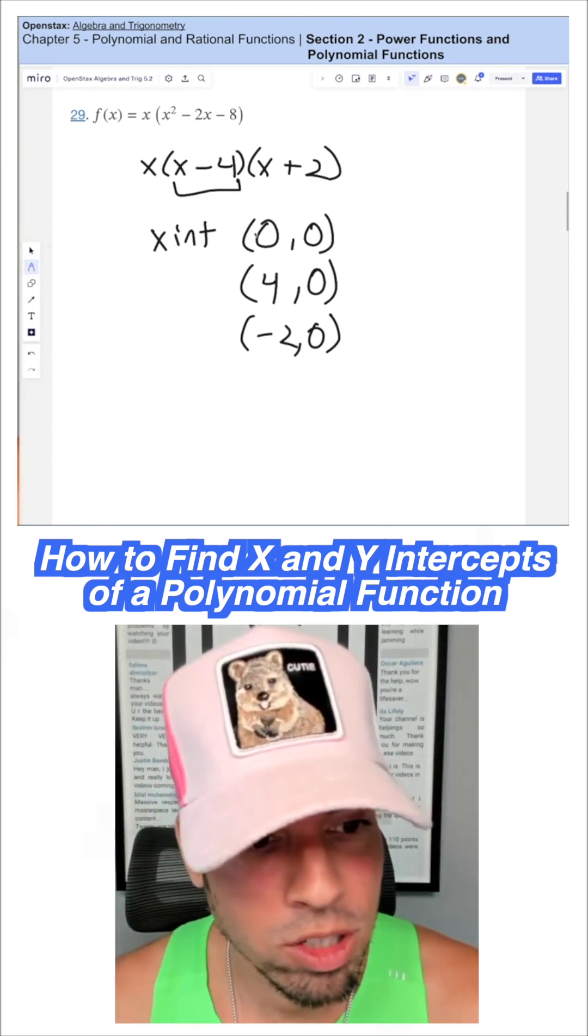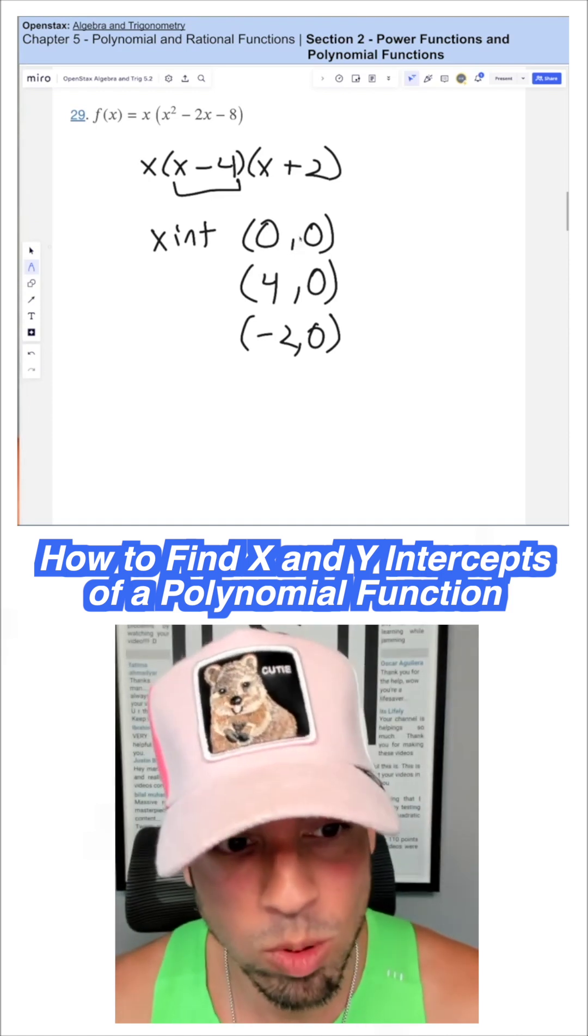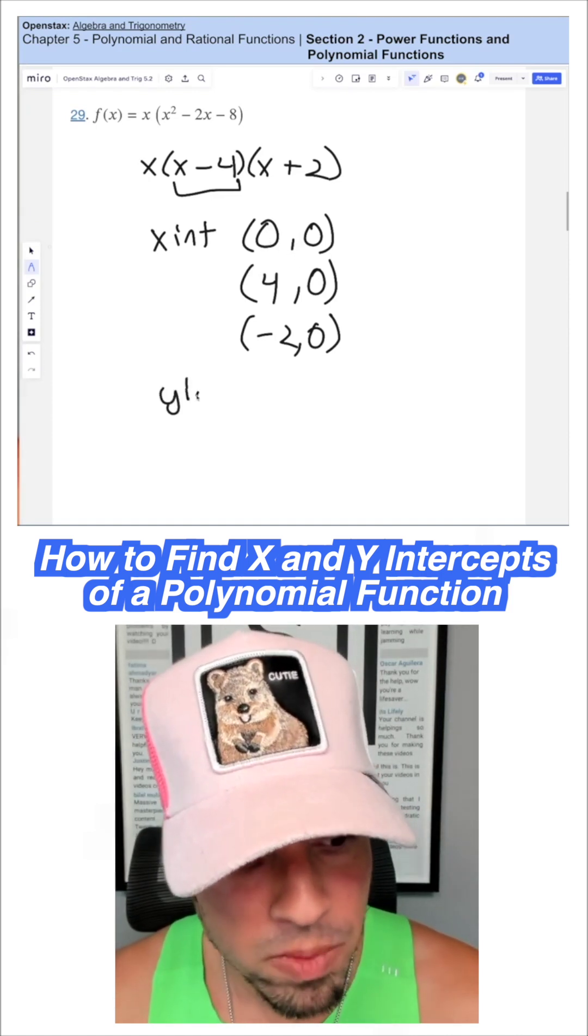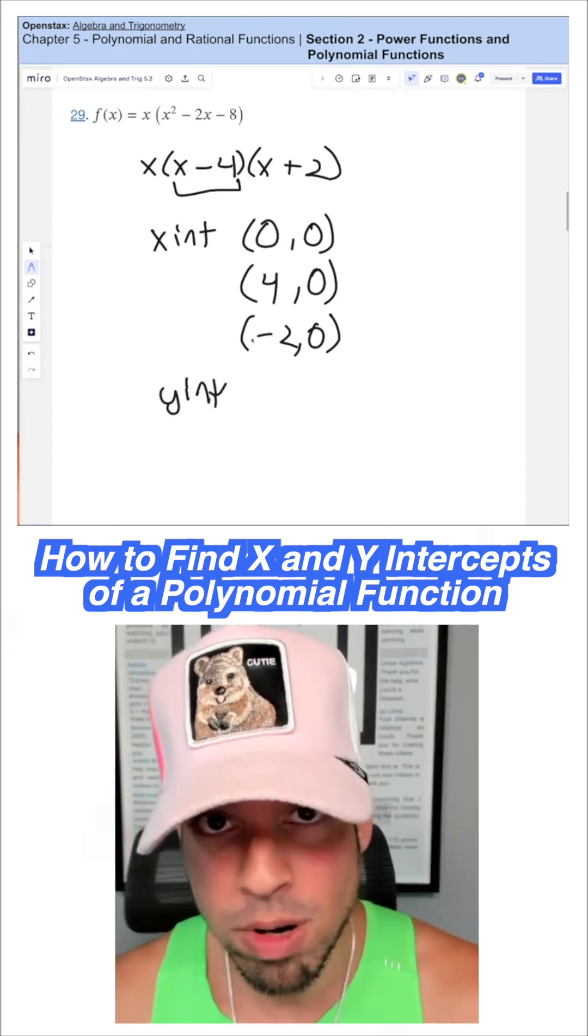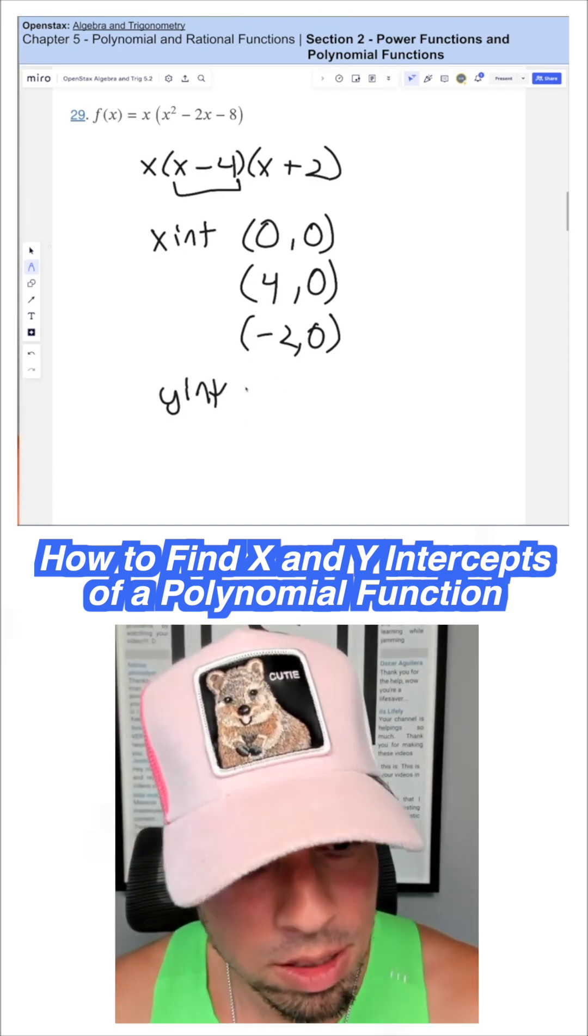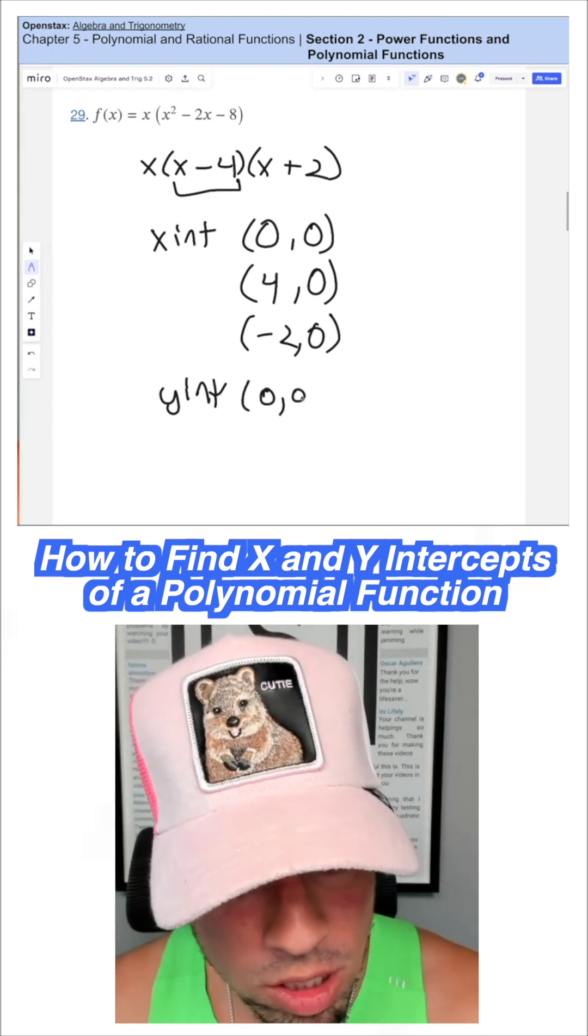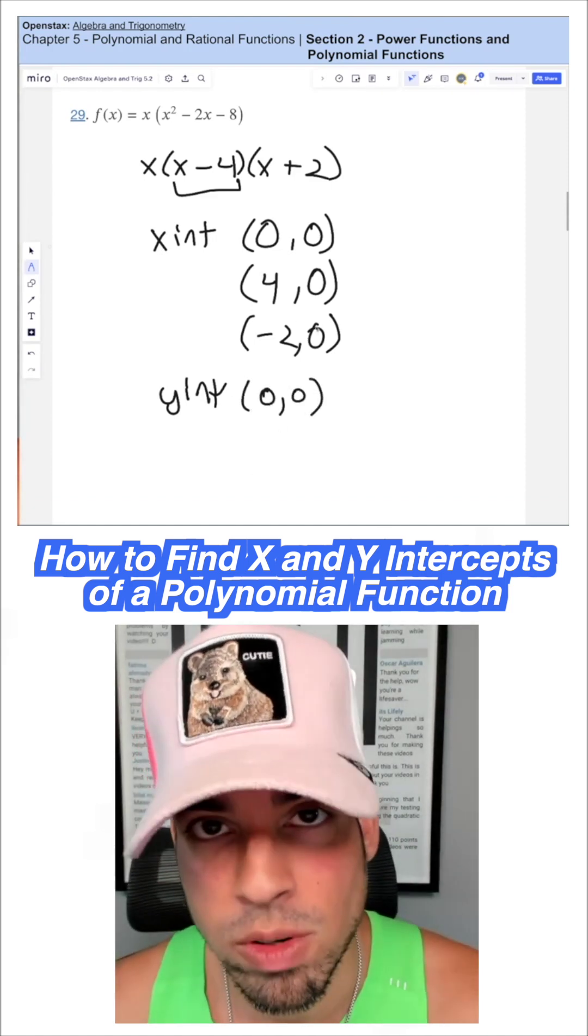Now we come to the y-intercept. You notice we already know the y-intercept. The y-intercept is when x equals zero. Well, guess what? It's that point right here. We're only going to have one y-intercept for a proper function. So this is our y-intercept as well, kind of doubles as an x and a y-intercept. So there's your answer.